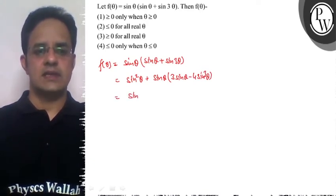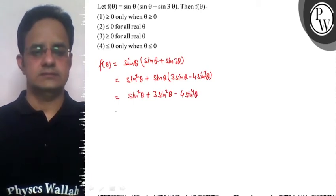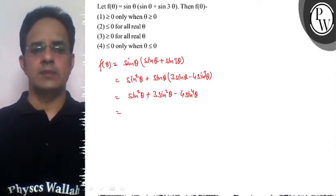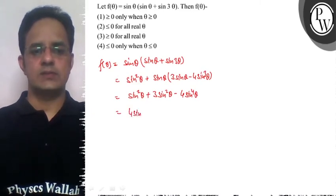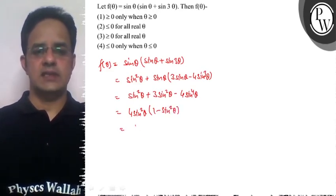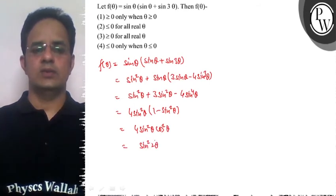Which is sin²(θ) + 3sin²(θ) - 4sin⁴(θ). It becomes 4sin²(θ). So if we take 4sin²(θ) common, then we get (1 - sin²(θ)). This means the function is 4sin²(θ)cos²(θ), which is sin²(2θ).